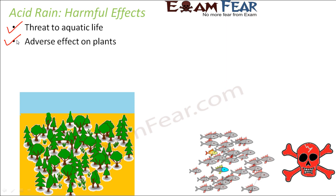Acid rain can also adversely affect plants and crops. Water is essential for plant and crop productivity, which is why we have irrigation. If rainfall contains poisonous substances, it can kill crops in the field. When this acidic rainwater reaches the soil, it reacts with soil nutrients chemically, depleting them so plants cannot get the nutrients they require.